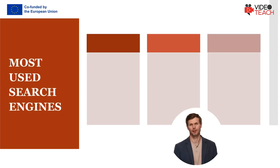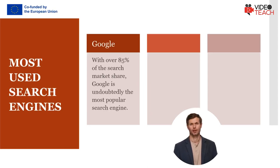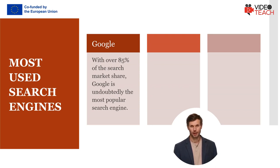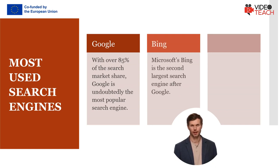Most used search engines. First, Google: with over 85% of the search market share, Google is the most popular search engine, with 95% of its traffic from mobile. The large traffic potential makes Google a viable option when aiming to capture organic or paid searches. Second, Bing: Google's biggest contender, it takes in 7% of US desktop searches but only 1.5% of mobile searches.